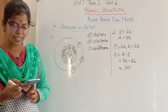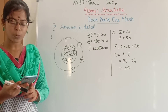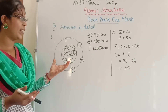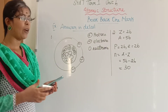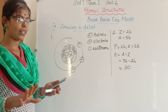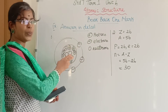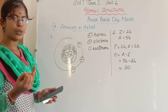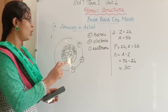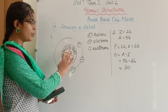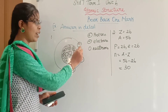Ninth section: answer in detail. First question: draw the structure of an atom and explain the position of the subatomic particles. In an atom there is a nucleus, and in the nucleus there are protons and neutrons. Protons have a positive charge and neutrons are neutral. Electrons, which are negatively charged, revolve around the nucleus.